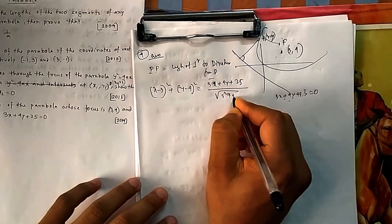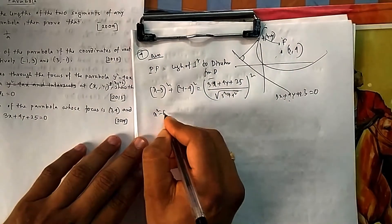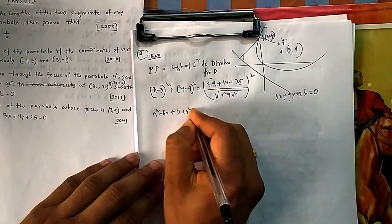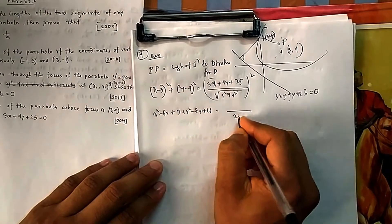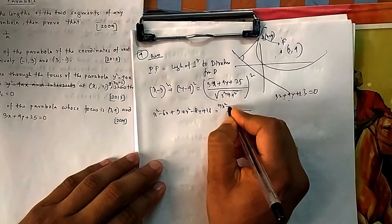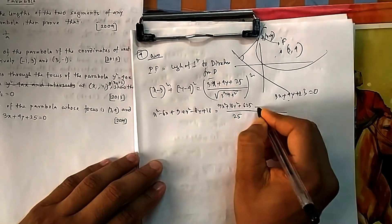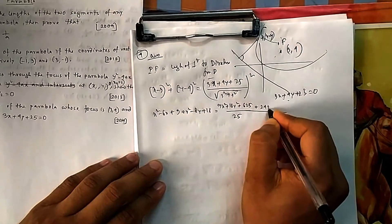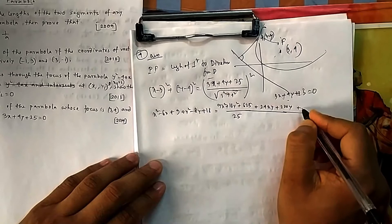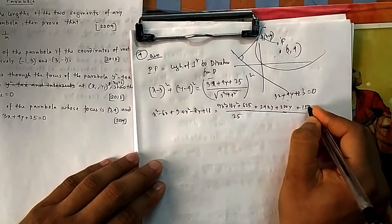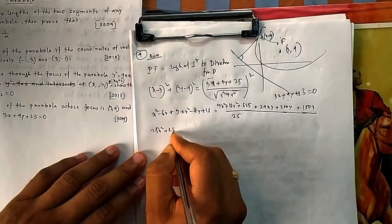So if you take square both sides, it will be x² - 6x + 9 + y² - 8y + 16 = here it will be 9x² + 16y² + 625 + 24xy plus 200y plus 150x divided by 25.